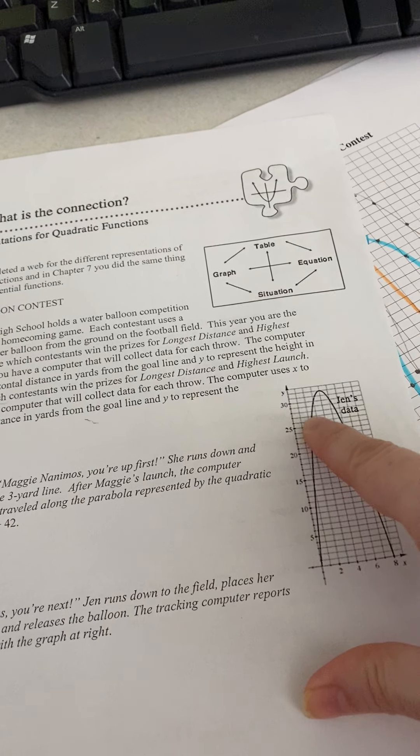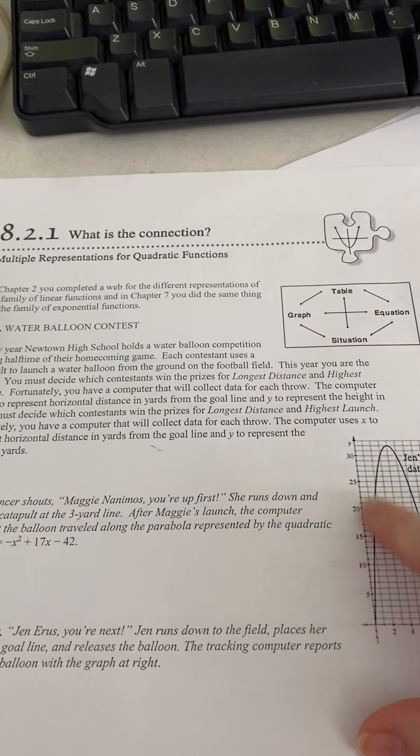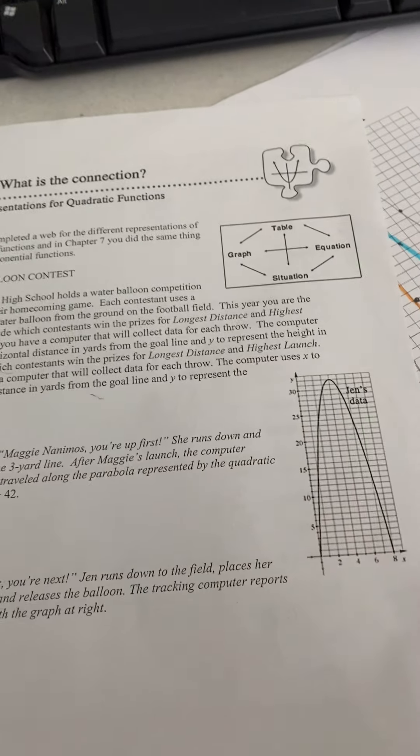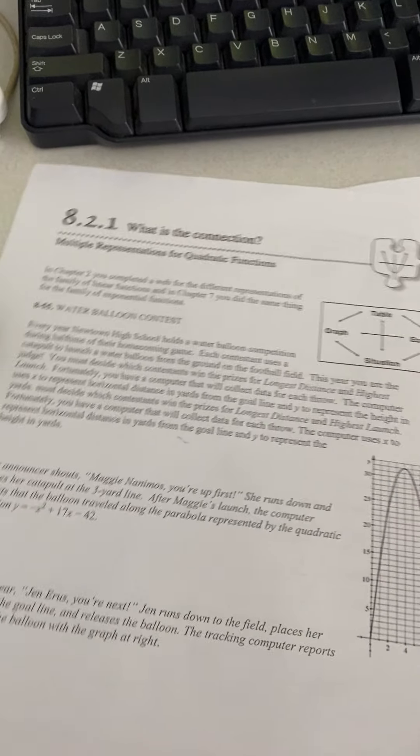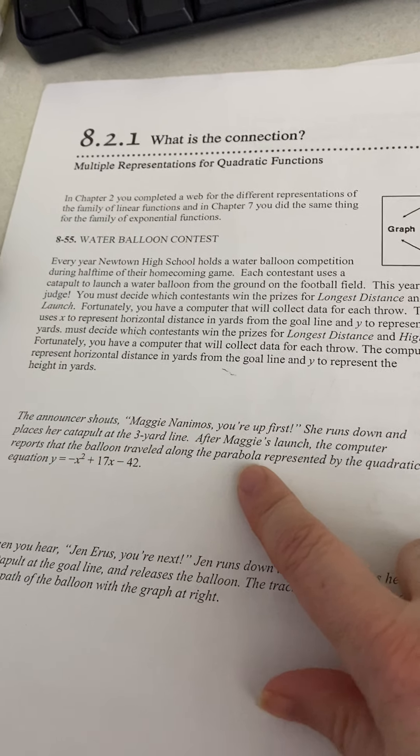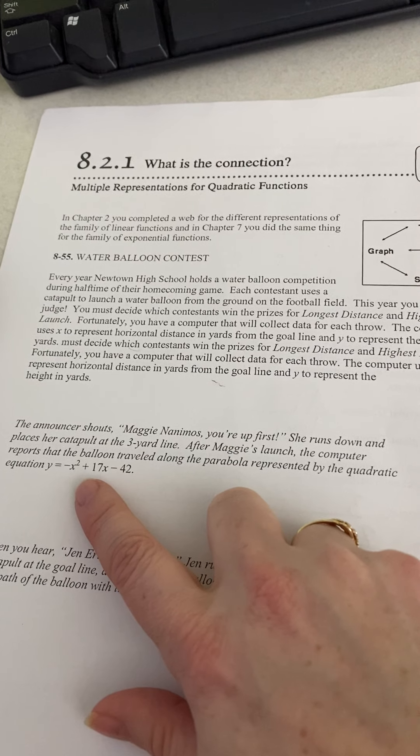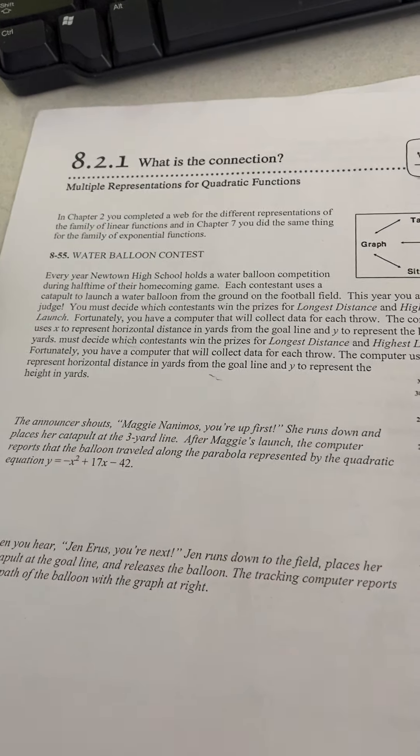She launches it right here, shoots it up in the sky, comes back down. That's kind of the parabolas are really good for things that you would throw up in the air and they'd fall back down. So, Maggie, her launch is going to be with the equation y equals negative x squared plus 17x minus 42.